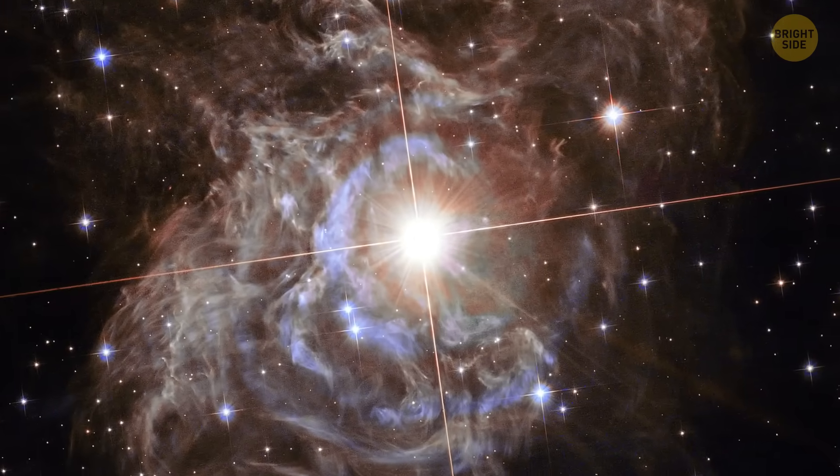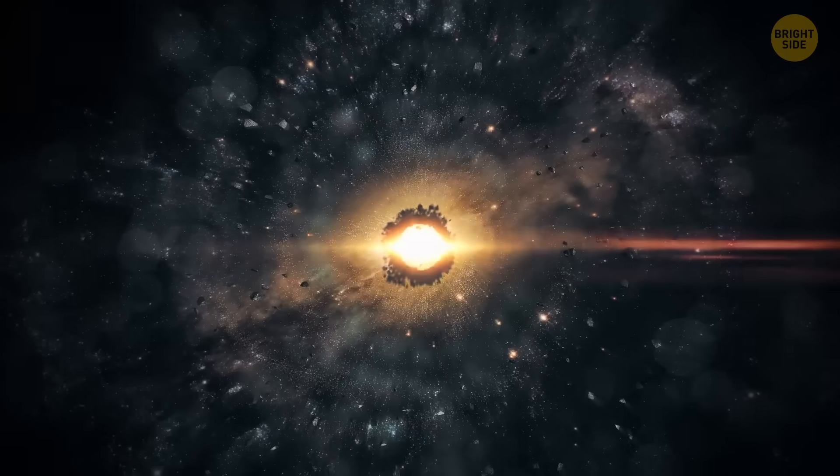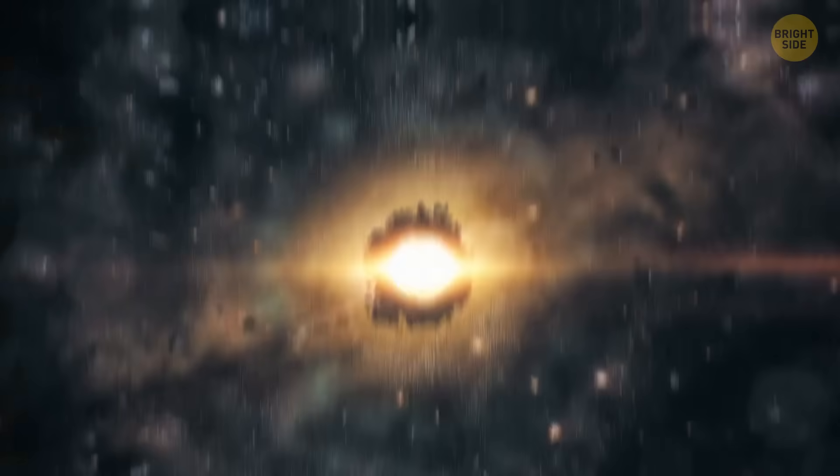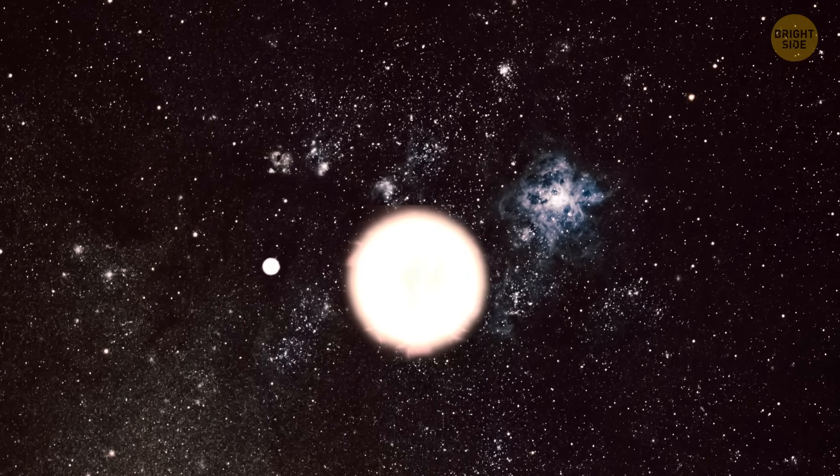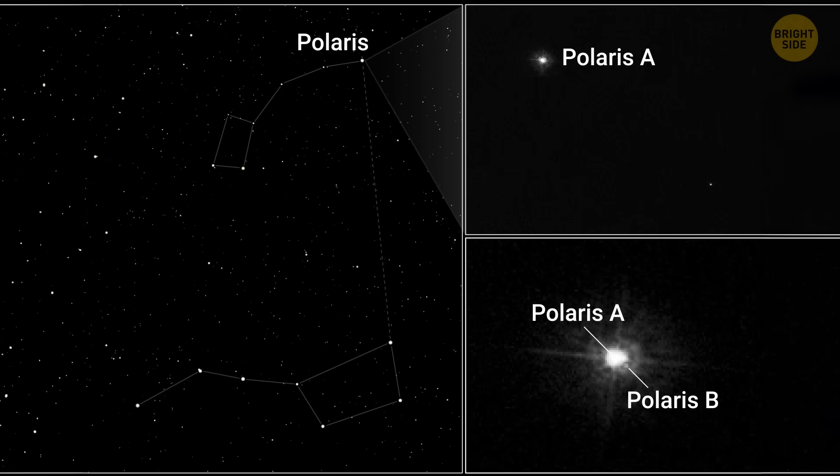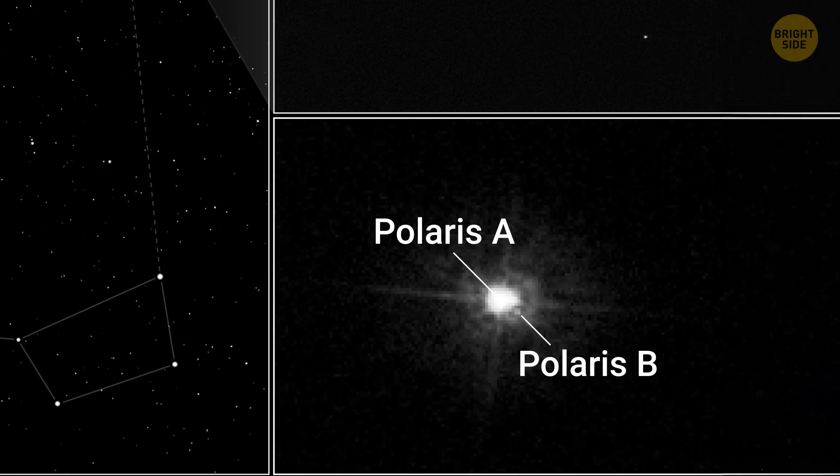It's also Earth's closest Cepheid. That's what we call a star that pulses regularly in brightness and diameter. Polaris is also part of a binary system of two stars. It's got a dimmer sister known as Polaris B. You can actually see it circling the North Star from Earth.